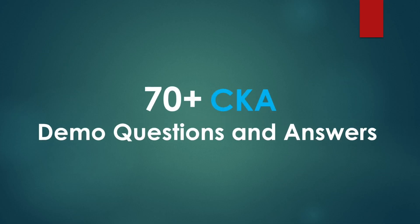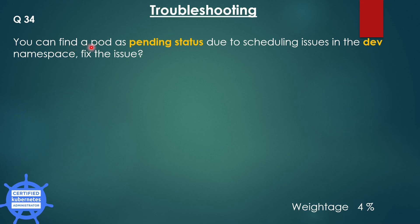Welcome to another part of the CKA 70 questions series. The next question is from the troubleshooting part. You can find a pod in the dev namespace in pending status due to scheduling issues, and you have to find the issue and fix it. Multiple types of scheduling questions will be covered in this series, and this is one of them. Without delay, let's go to the cluster.